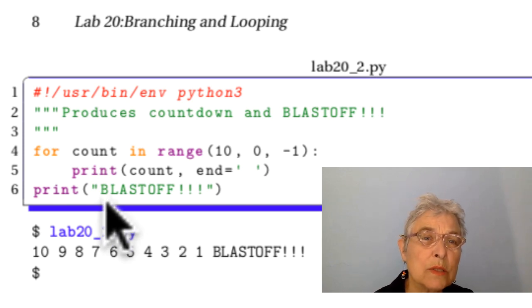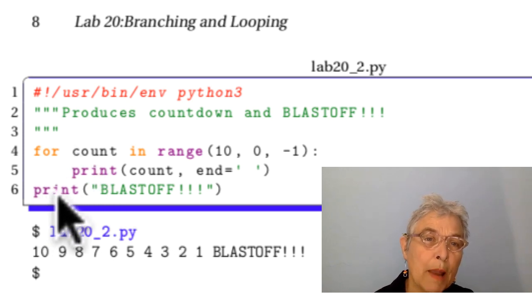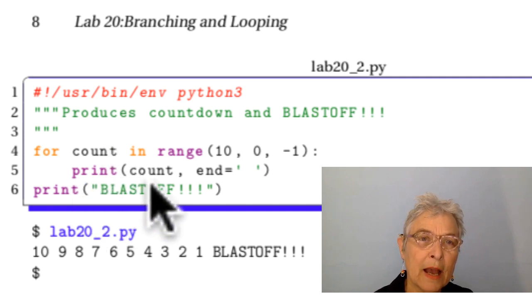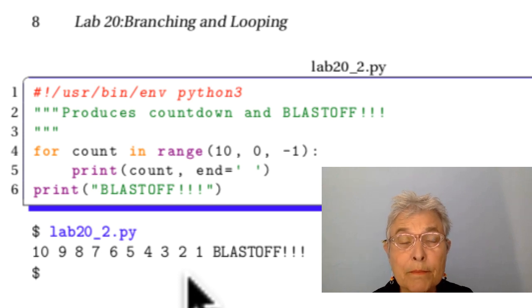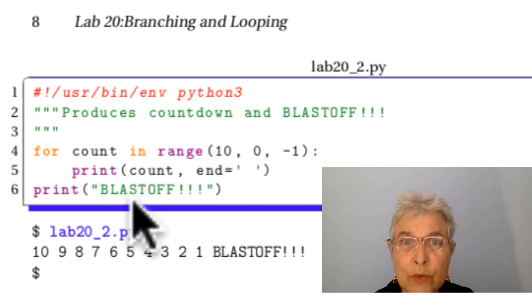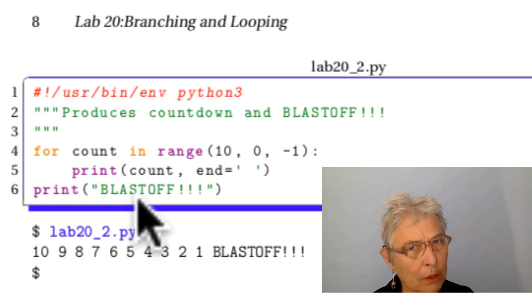Now, sometimes a student will put that print Blast Off in the for loop and say, if count equals 1, Blast Off. And the output looks the same, but it's much slower. And also, it's not as logical for the person who reads your code. So when you have something that only happens once, it does not belong in a loop.